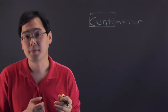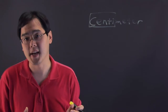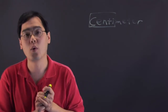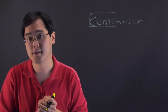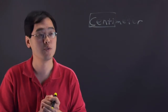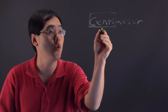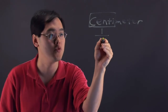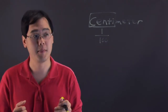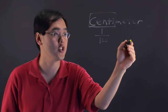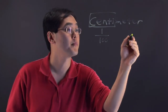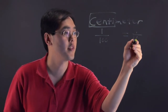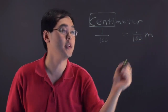Centi, no matter what the context is — whether it be centiliter, centimeter, or centigram as some circles will use — centi is always equal to one one-hundredth of anything. So a centimeter, by definition, is equal to one one-hundredth of a meter.